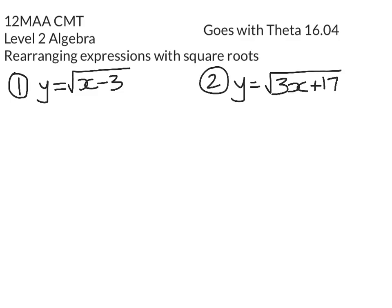Okay, so we need to make x the subject of the formula, but x is lurking under a square root sign. So the inverse operation to square rooting is to square. We can square both sides of the equation, and we're going to get y squared equals x minus 3. Adding 3 to both sides, we get y squared plus 3 equals x, and that's the first one done.